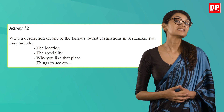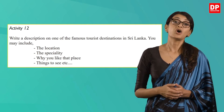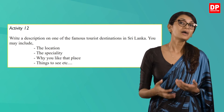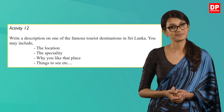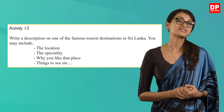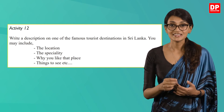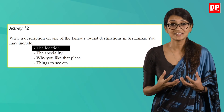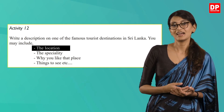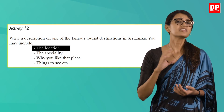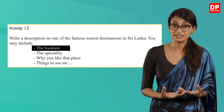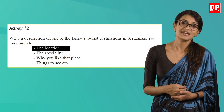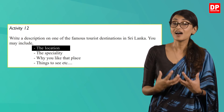Activity 12 asks you to write a description of a famous tourist destination in Sri Lanka, with some guidelines. First, you are asked to mention the location — where it is situated. When I described the Nallur Kandaswamy Temple, I mentioned it was in the Northern Province. Similarly, when writing about the Galle Face Green, I stated it was situated in the heart of Colombo.